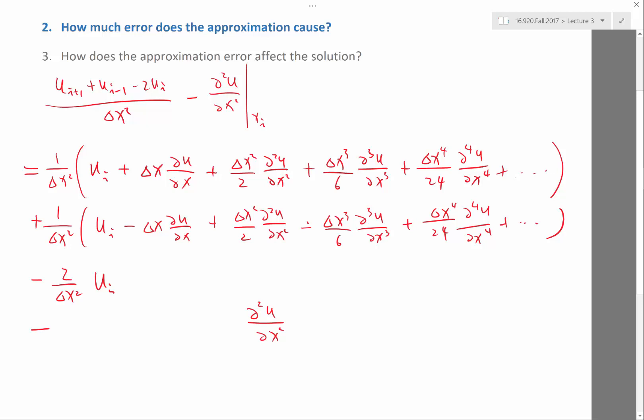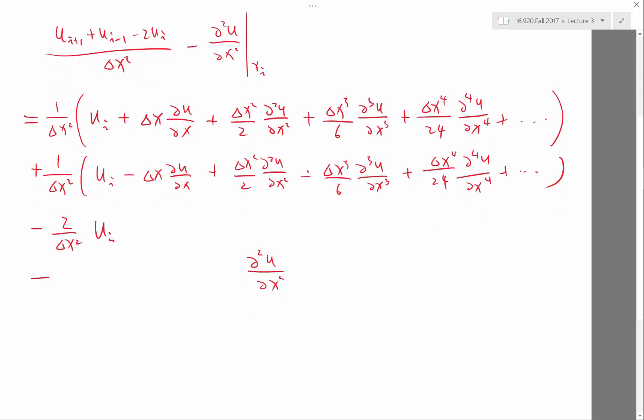So, I'm going to write these terms here. It is equal to, look at the first column. It cancels, right? 1 over delta x squared, 1 over delta x squared minus 2 delta x squared over delta x squared. Cancels. Second term cancels. Third term, we have plus half, plus half. Both divided by delta x squared. So, this delta x squared cancels. Then, we have minus 1. So, this also cancels.